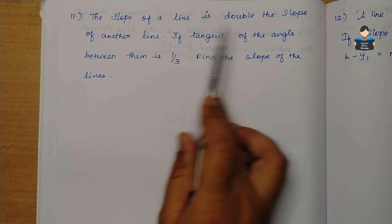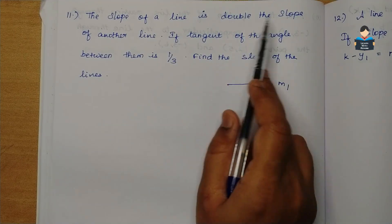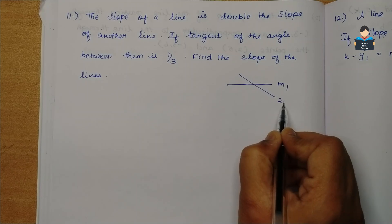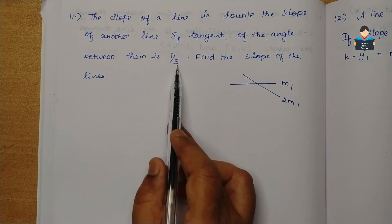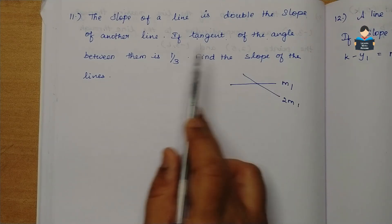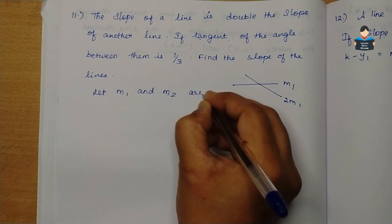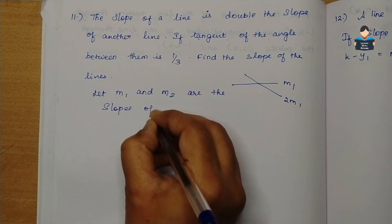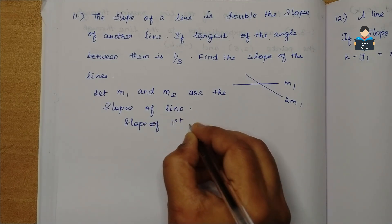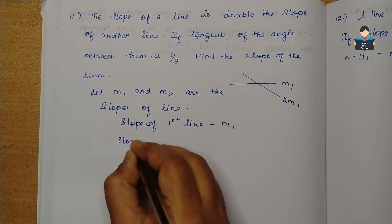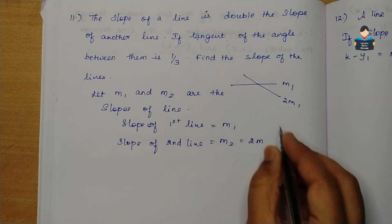Now the 11th sum, 11th question. The slope of a line is double the slope of another line. So let the slope of the first line be M1. The slope of the second line M2 is double the first line, so M2 equals 2M1.